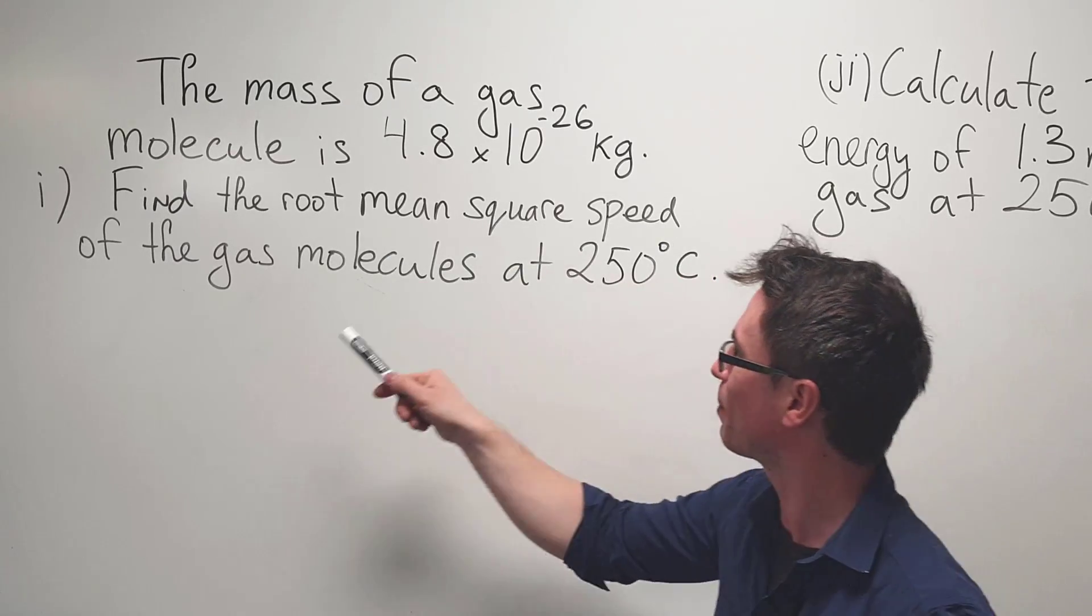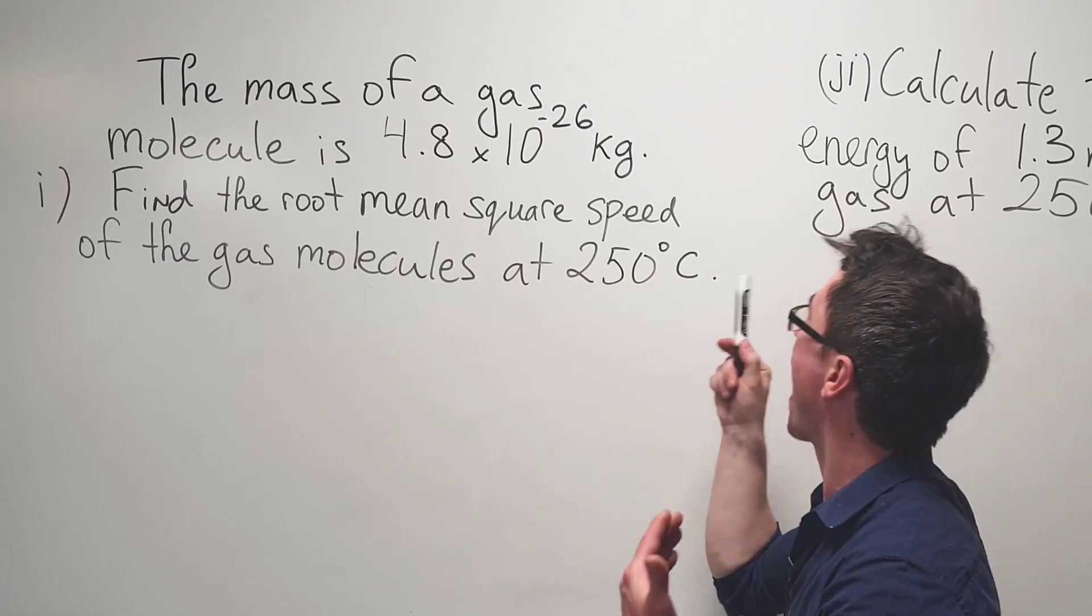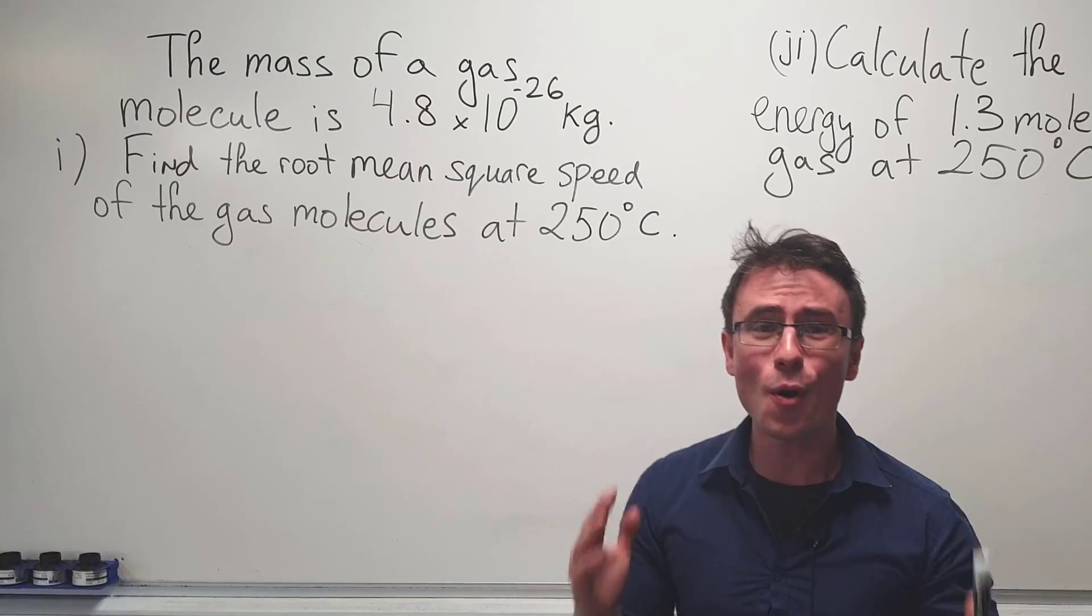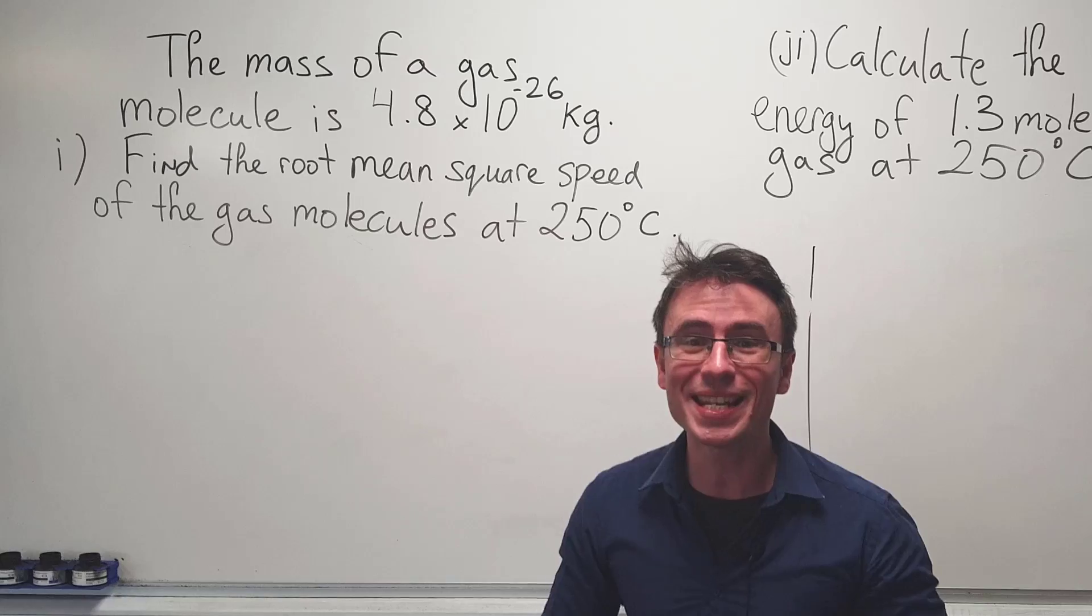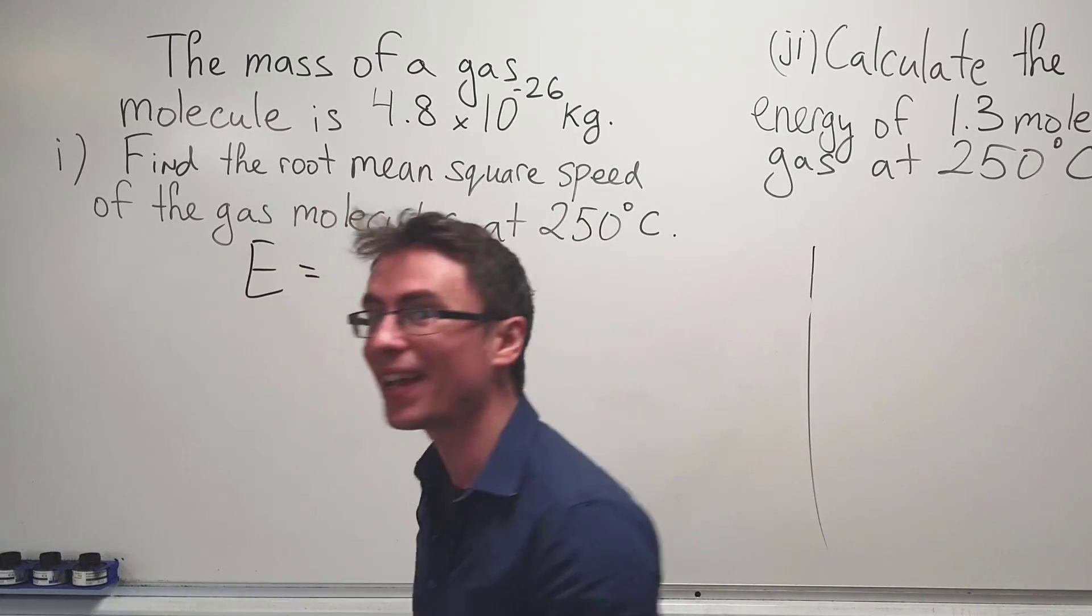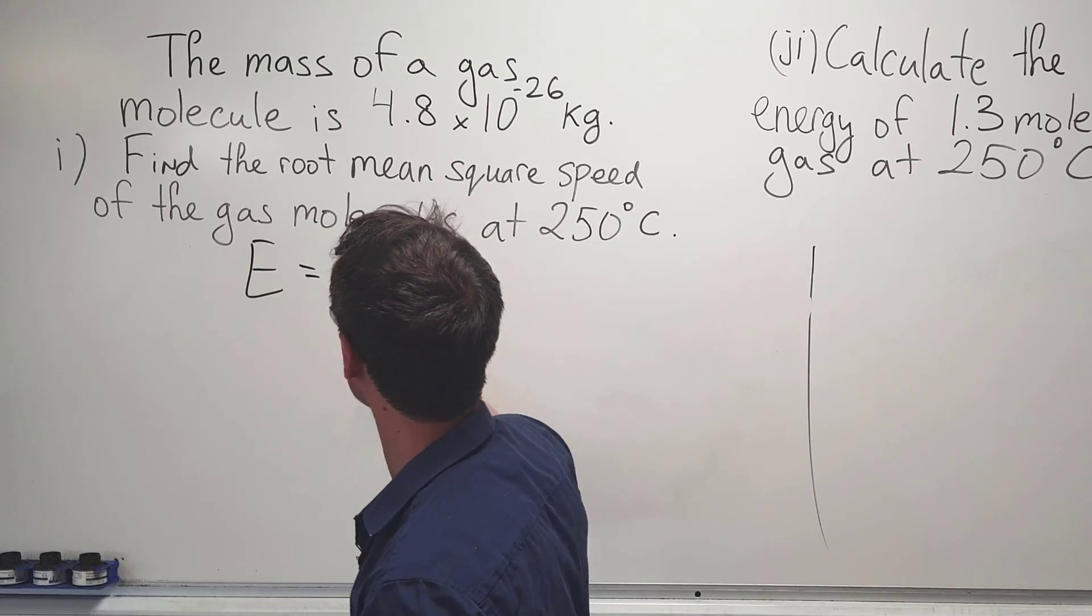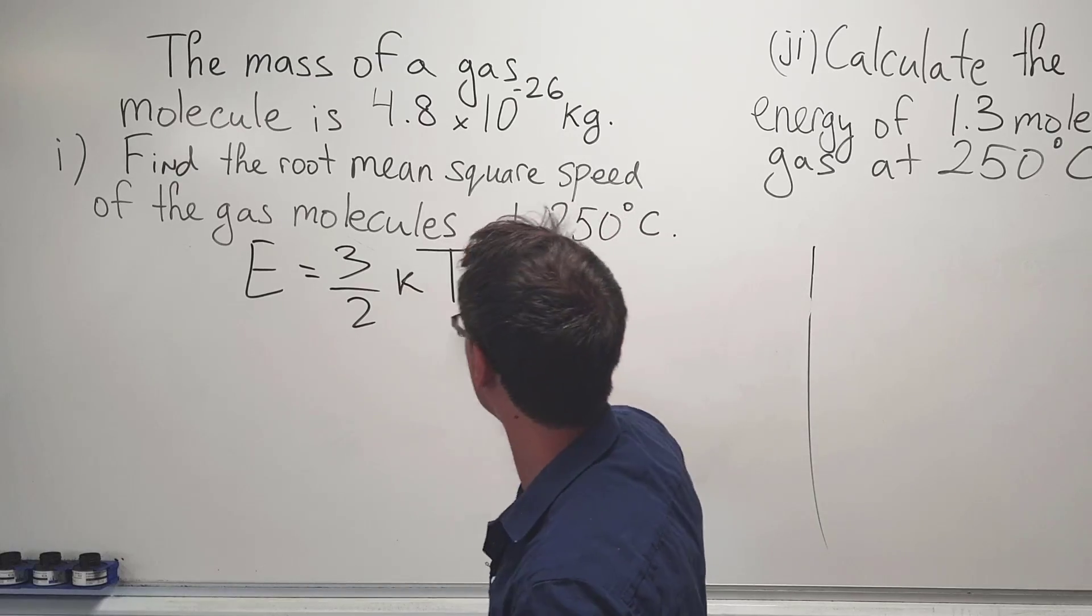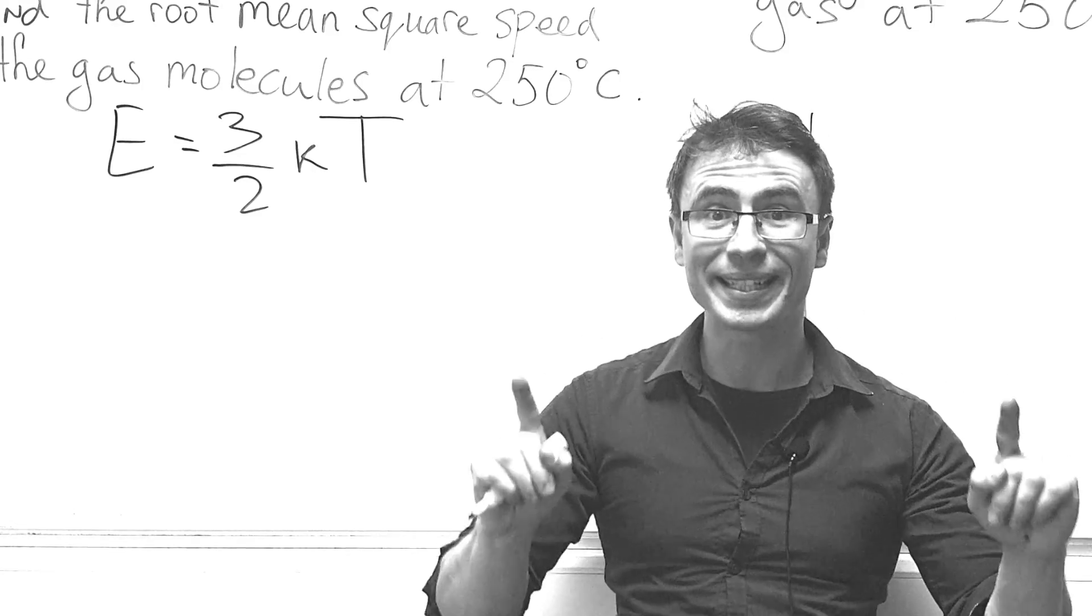Find the root mean square speed of the gas molecules at 250 degrees Celsius. In order to tackle this problem, we need to use the equation that the energy of a single molecule is equal to three halves multiplied by Boltzmann's constant multiplied by the temperature in Kelvin.